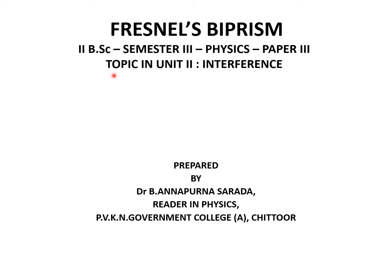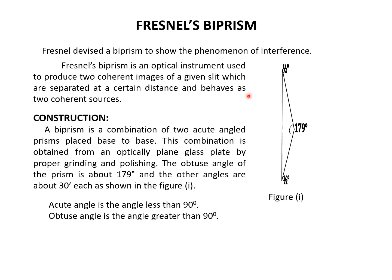In this lecture, I am going to explain about Fresnel's biprism. Fresnel's biprism was devised by a scientist Fresnel to show the phenomena of interference. It is an optical instrument used to produce two coherent images of a given slit which are separated at a certain distance and behave as two coherent sources. Fresnel's biprism was devised to produce coherent sources.